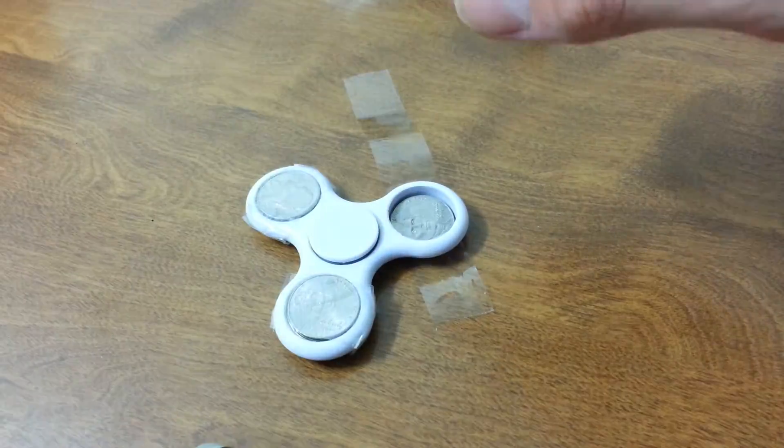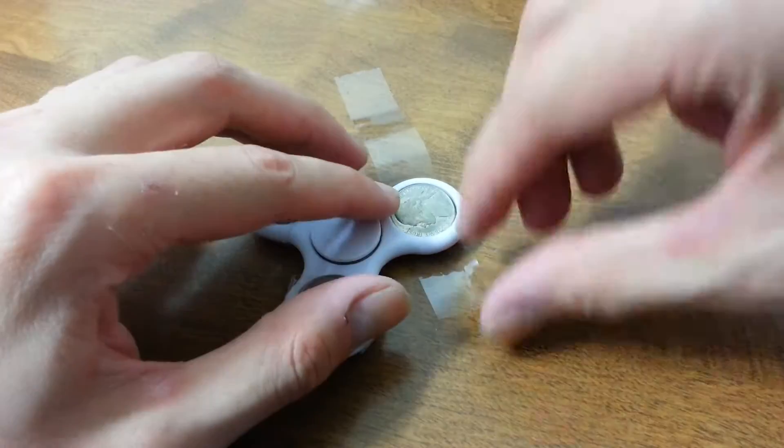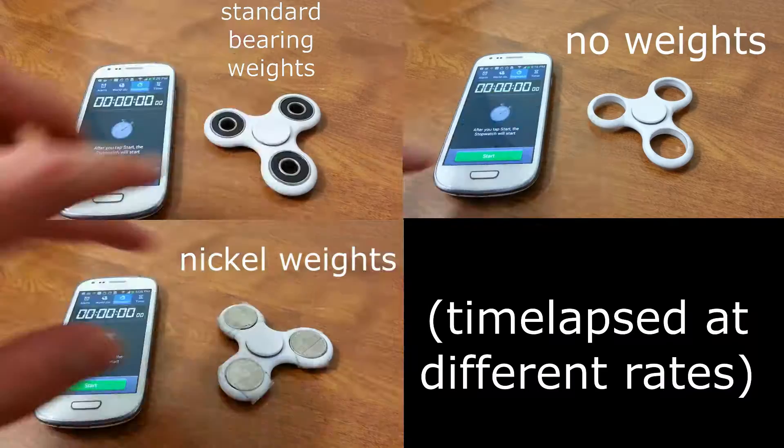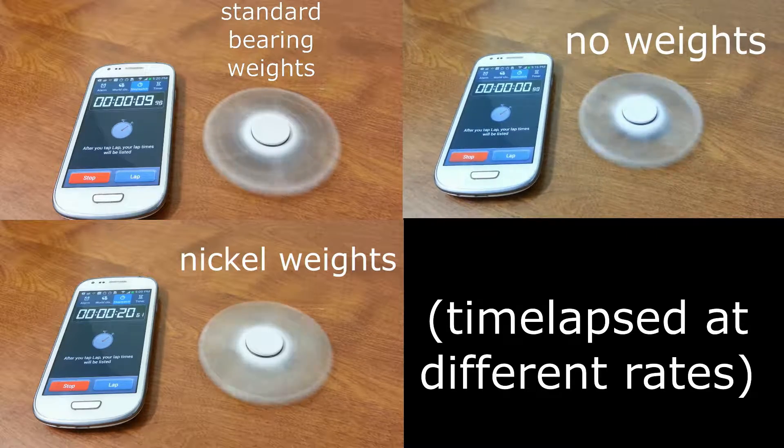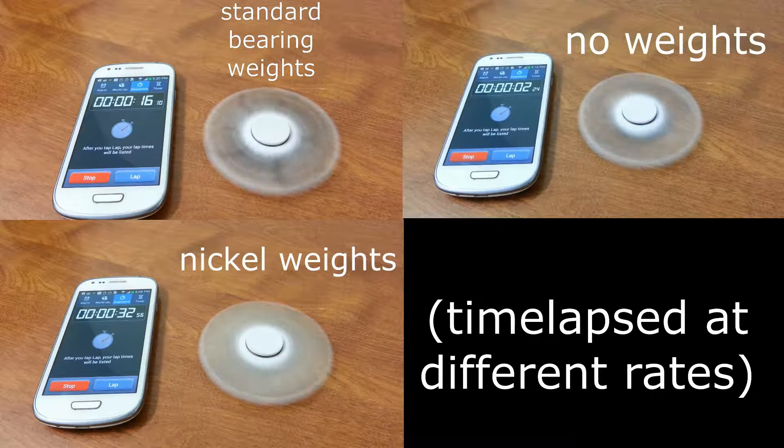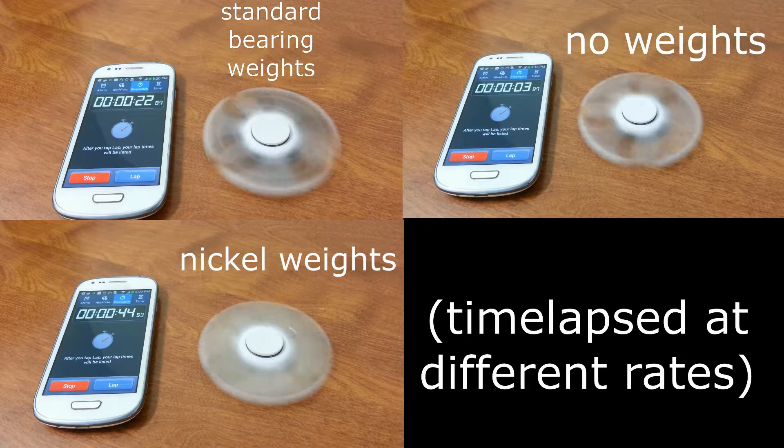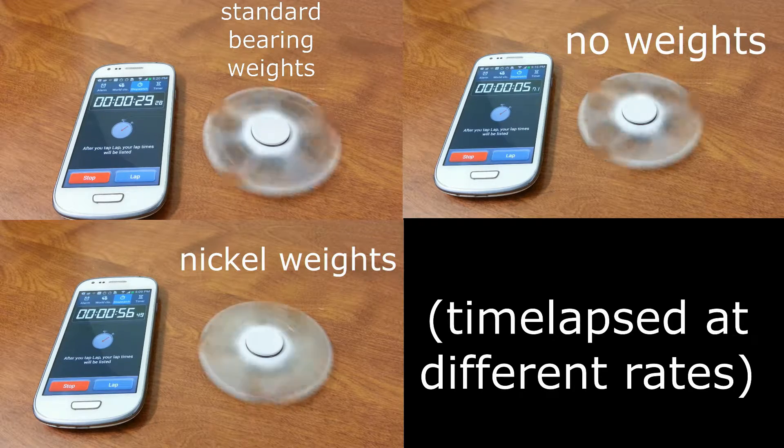The reason this works is nickels are made of 75% copper and 25% nickel. This gives them a density of 8.9 grams per cubic centimeter, versus steel which is at 7.9 grams. That's about 12% more dense than steel.